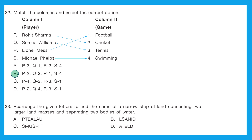Question 33: Rearrange the given letters to find the name of a narrow strip of land connecting two larger land masses and separating two bodies of water. Unscrambling the options: A gives 'pletu,' B gives 'island,' C gives 'isthmus,' and D gives 'delta.' The right answer is C — isthmus.